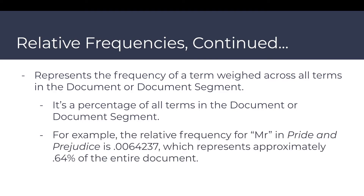Relative frequencies are a percentage of all terms in the document or document segment. For example, the relative frequency of 'Mr.' in Pride and Prejudice is 0.0064237, which represents approximately 0.64% of the entire document.